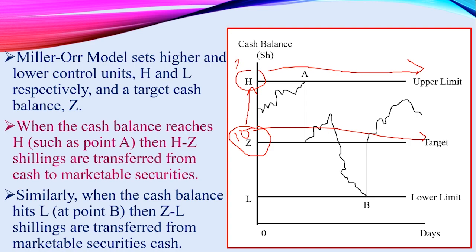For example, if you set your upper limit at 20,000, you also set a lower limit — the least amount of cash you can hold at any given time. Let's say a lower limit of 5,000. The y-axis of this graph represents the cash balance and the x-axis represents the number of days.